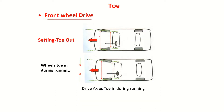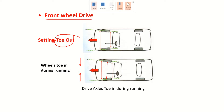In a front-wheel driven vehicle, the distance at the front of the wheels is longer than at the rear — this is what we call a toe-out condition. It happens in front-wheel drive vehicles because if the static setting is toe-out while running, the drive shafts pull the wheels inward, so the wheels become straight. That is why in front-wheel drive we will have a toe-out setting.